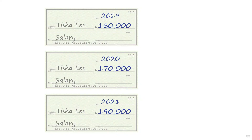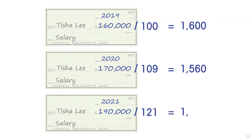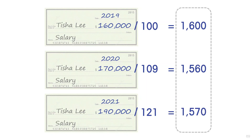If prices are rising more slowly than the increases in your nominal salary, then you're better off — you can buy more. But if prices are rising faster, you're actually getting worse off because your purchasing power will be less. We can work out what is happening to our real pay by using a price index: divide each nominal salary by the corresponding price index for that year. The result represents your real salary, showing that — taking account of nominal salary increases and rising prices — your purchasing power went down in 2020 and then went up slightly in 2021, but not enough to get back to the level of two years before.